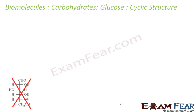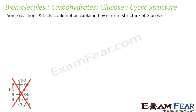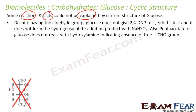Now we'll talk about the cyclic structure of glucose. The straight-chain structure of glucose proposed till now does not satisfy a lot of observations seen for the carbohydrate, that is glucose. It does not explain some of the facts — for example, glucose has an aldehyde group but still it does not give the 2,4-DNP test.